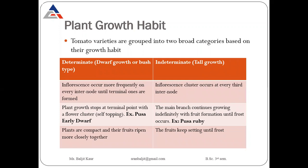Now, plant growth habit. Tomato varieties are categorized into two types: one is determinate and the other is indeterminate. Determinate means the plants are dwarf in nature or bush type, and indeterminate means they grow very large and are very tall. So determinate type are dwarf varieties and indeterminate are tall varieties.